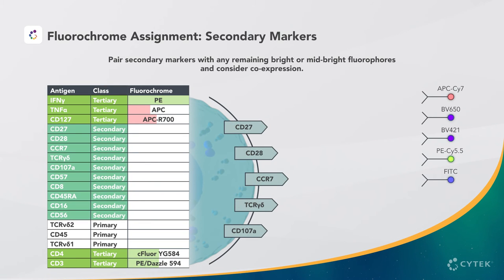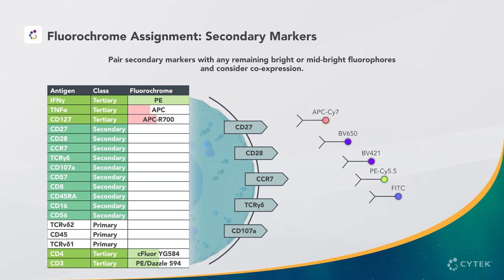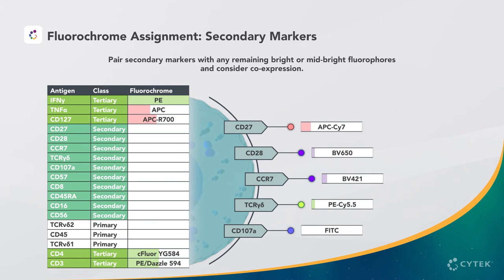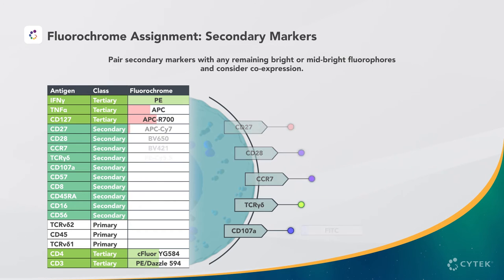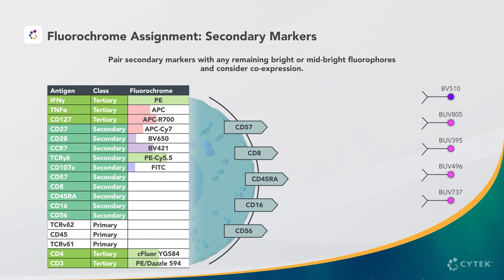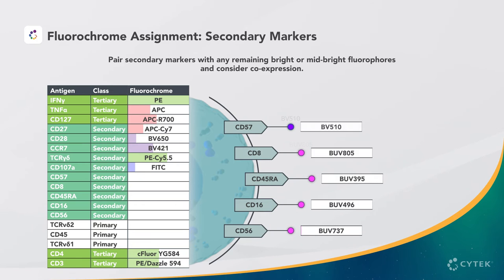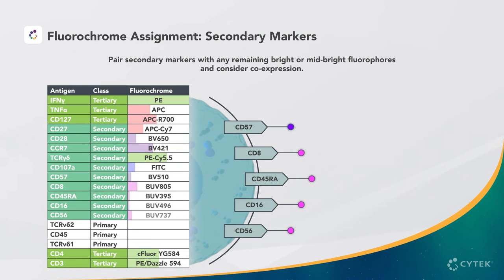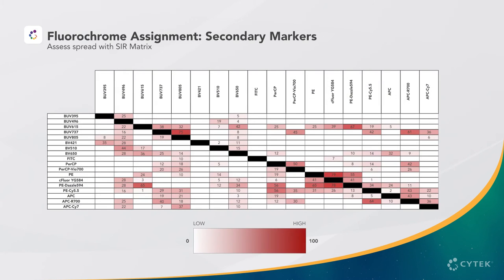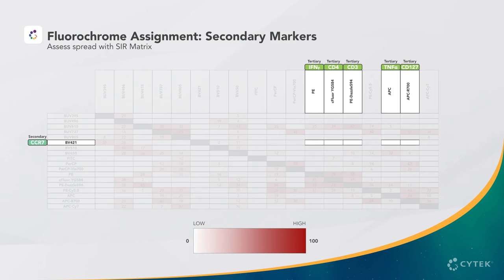Moving to the secondary antigens, we need to factor in marker coexpression as we select any remaining bright or mid-bright fluorochromes. For secondary markers that are coexpressed with tertiary or other secondary markers, we should consult the Stain Index Reduction, or SIR, matrix. Let's look at this example of CCR7 on BV421. We can see that this placement will not impact the resolution of our five tertiary markers, so we will keep it here.